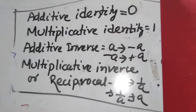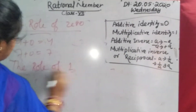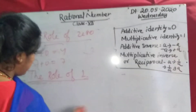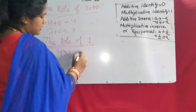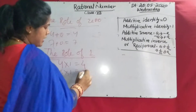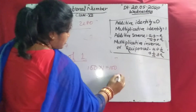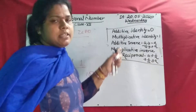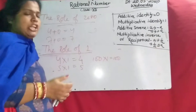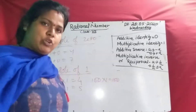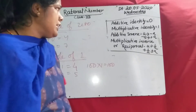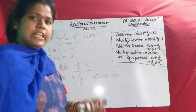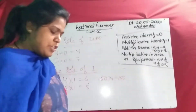Then come to multiplicative identity — the role of 1. When you multiply any number with 1, no value will be changed. Suppose 4 multiplied by 1 is 4, 5 multiplied by 1 is 5, 100 multiplied by 1 is 100. So 1 is called multiplicative identity. Any number you multiply by 1, you get the same number. And 0 is called additive identity because when you add 0 with any number, no value will be changed — you will get the same answer.